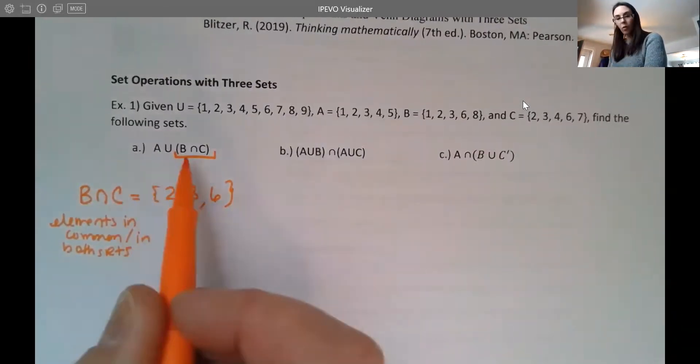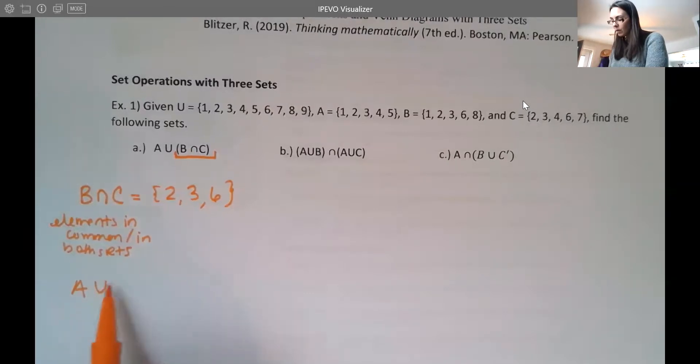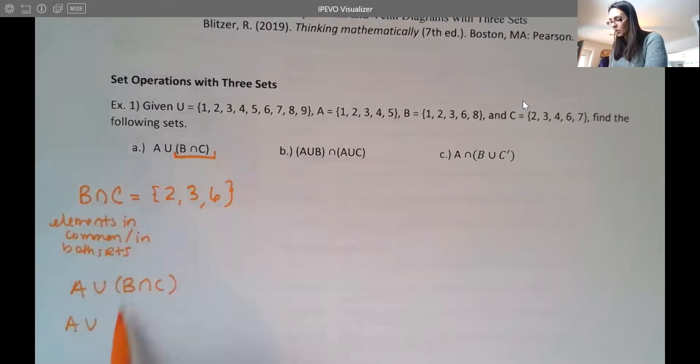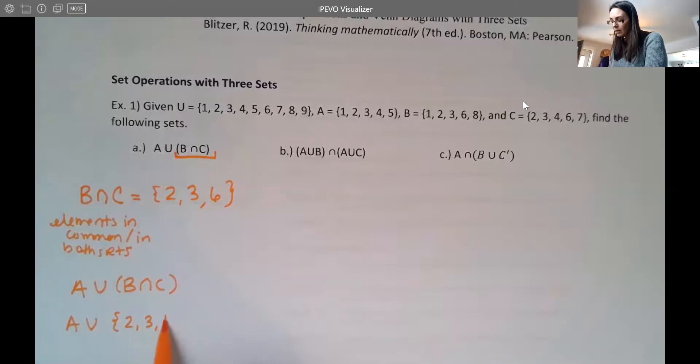I don't see any ones. I have the two, the three, the six, and then the eight, four, and seven don't have any matches. So that would be our intersection. Now I'm going to find the whole thing. So now I'm looking at A union B intersect C. So I'm looking at A union, and then sometimes it helps us to write the set in there: two, three, six. Just kind of reminds you what those values were or those elements were.